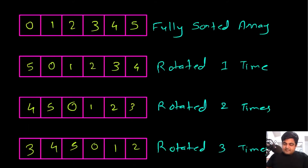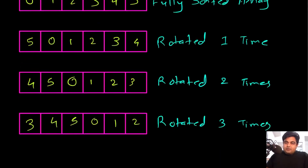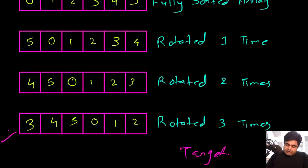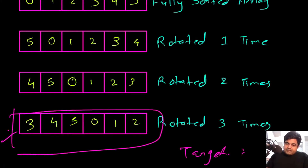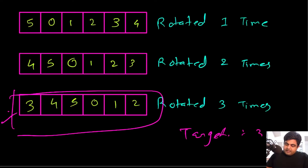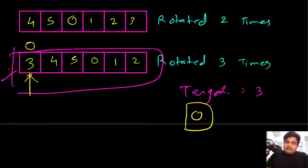We are given a rotated sorted array but we don't know how many times it has been rotated. We are also given a target element and we need to check whether it exists inside this array or not. For example, if the array is given as input and the target is three, and three exists at index zero, we need to return zero as the answer.